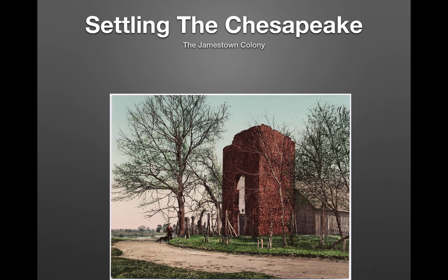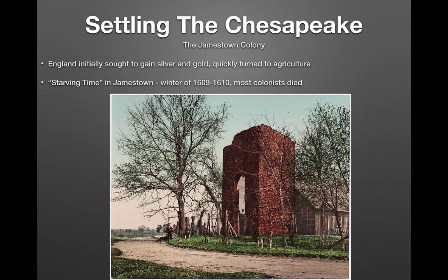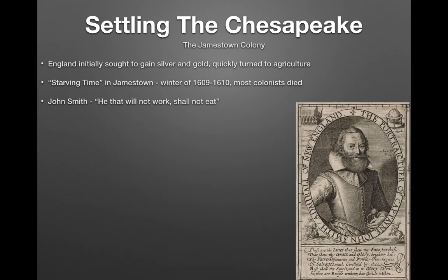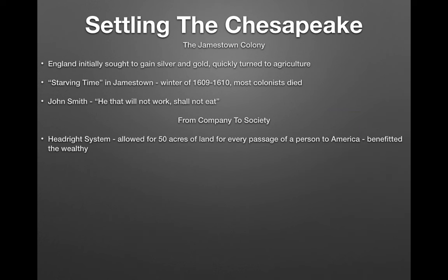European expansion transformed native land — cornfields were affected by cattle and pigs, and forests were cut down for lumber. The Jamestown colony, the first permanent English settlement, was established in Virginia in 1607. England initially sought silver and gold like the Spanish, but quickly turned to agriculture, especially tobacco. The starving time was a brutal winter between 1609 and 1610 in which most colonists died. John Smith emerged as a leader, insisting people work to eat. The headright system granted 50 acres to anyone who paid for an indentured servant to come over.